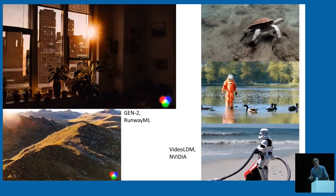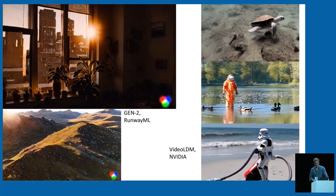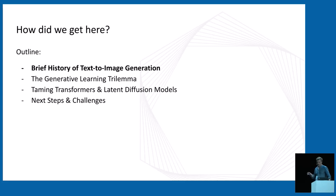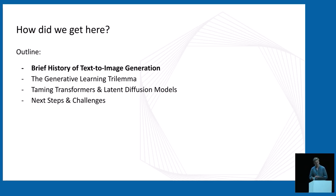In addition, we are also seeing the first entirely AI-generated video clips. On the left, we have clips from Runway's Gen 2 model, and on the right, NVIDIA's Video LDM. The question is how did we end up here, and I will try to answer this at least partially in the talk today. I want to start with a very brief overview of the short history of text-to-image models, then give a motivation for why latent generative models are useful based on something called the generative learning trilemma, introduce the approaches I've been working on — taming transformers and latent diffusion models — and finish with next steps and challenges.